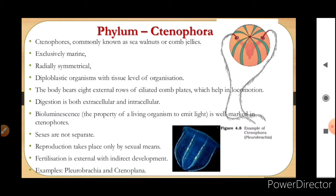They are diploblastic organisms with tissue level of organization. The cell aggregates have made tissue in these organisms and they perform the general basic functions for the phylum. They are diploblastic animals, meaning they possess undifferentiated mesoglea. They have ectoderm, endoderm, and an undifferentiated sheet called mesoglea — two germ layers.